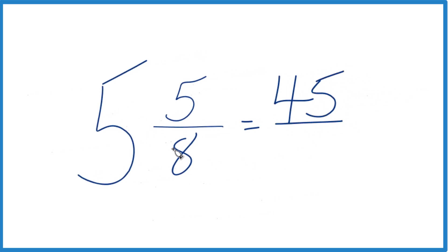And then for the denominator, we just bring the 8 across, and 45 eighths, that's the improper fraction for the mixed number 5 and 5 eighths. Let's do it again.